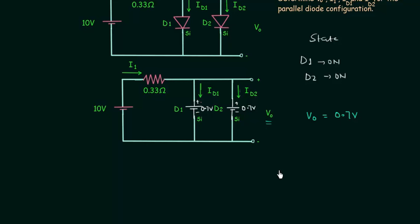Now we will calculate the current I1. I1 is the current through this resistance and we will use Kirchhoff's voltage law to calculate I1. Plus 10V minus 0.33I1 minus 0.7V equal to 0. So I1 is equal to 9.3 divided by 0.33 and this is equal to 28.18mA. This is the first answer. This is the second answer.